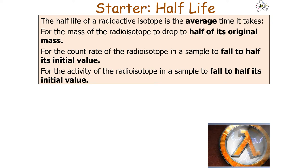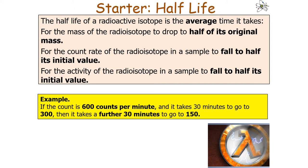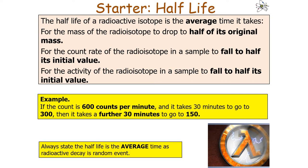The half-life of a radioactive isotope is the average time it takes for the mass of the radioisotope to drop to half its original mass, the count rate to fall to half its initial value, or the activity to fall to half its initial value. In practice, half-life is measured by the time it takes for the activity to halve. For example, if the count rate is 600 counts per minute and it takes 30 minutes to reach 300 counts per minute, the half-life is 30 minutes. We always state it as an average time because radioactive decay is a random event.